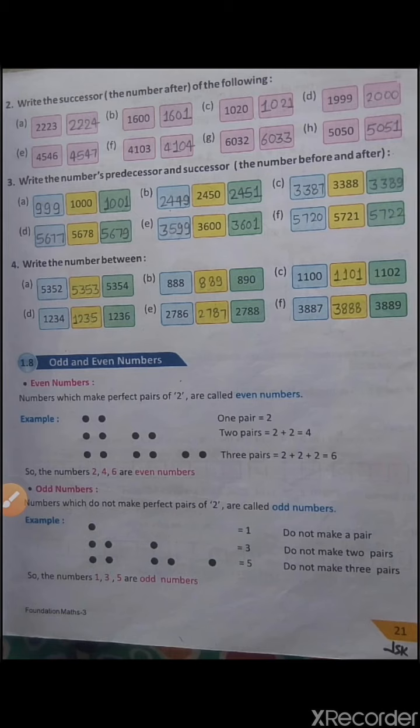The successor of 2223 is 2224. And in B, the successor of 1600 is 1601. And in C, the successor of 1020 is 1021. And in D, successor of 1999 is 2000. And in E, the successor of 4546 is 4547.